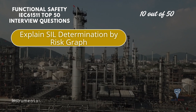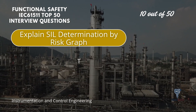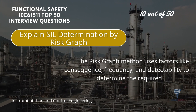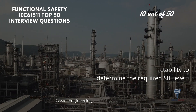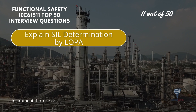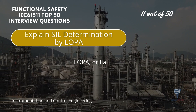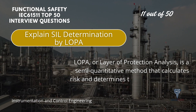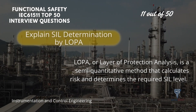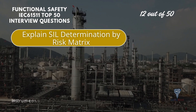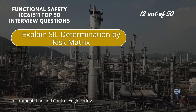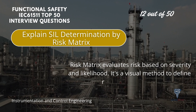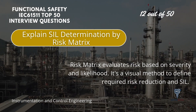SIL determination by risk graph: the risk graph method uses factors like consequence, frequency, and detectability to determine the required SIL level. LOPA, or layer of protection analysis, is a semi-quantitative method that calculates risk and determines the required SIL level. Risk matrix evaluates risk based on severity and likelihood — it is a visual method to define required risk reduction and SIL.